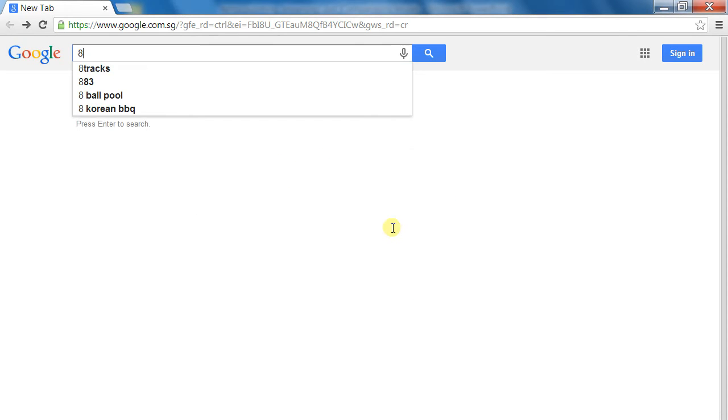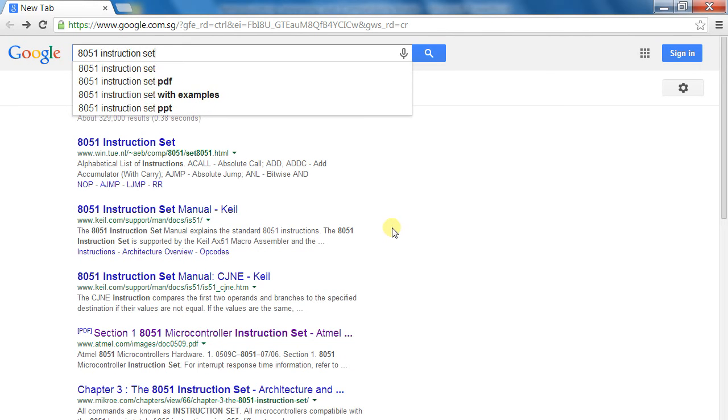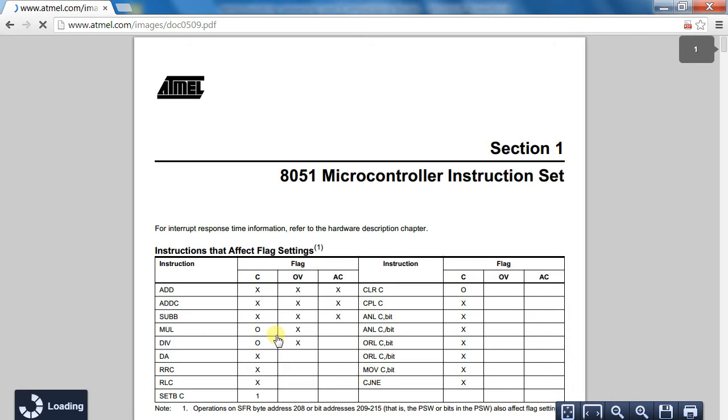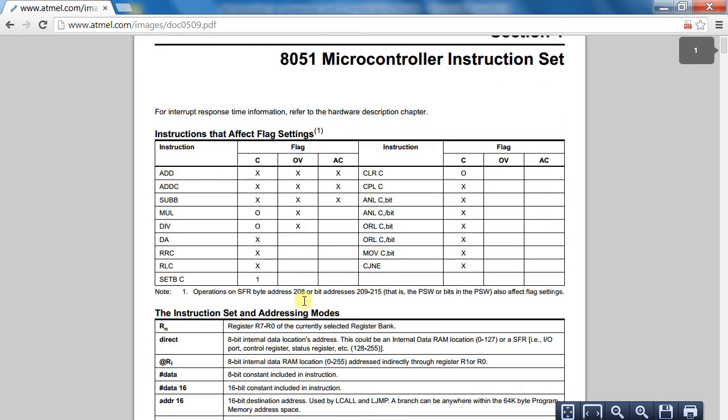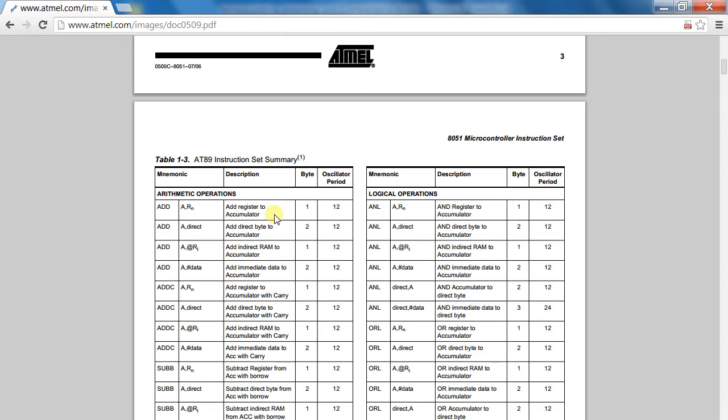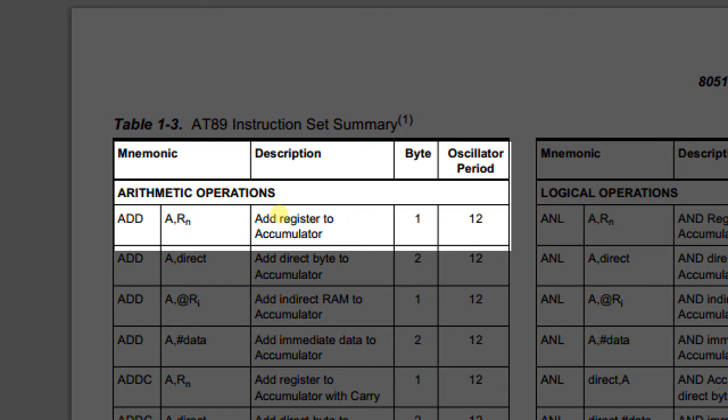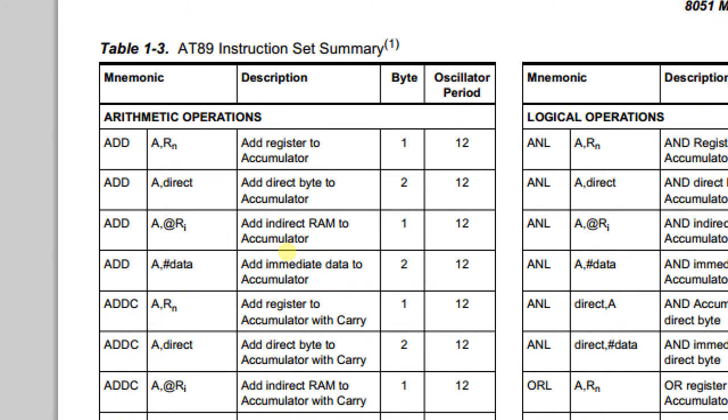Let's refer to the document called the 8051 instruction set. You should be able to find many 8051 instruction sets on the web. Let's choose the 8051 instruction set. Let's examine this instruction, add register to accumulator. This instruction takes 12 oscillation periods to execute. All the other instructions can be found in this document.